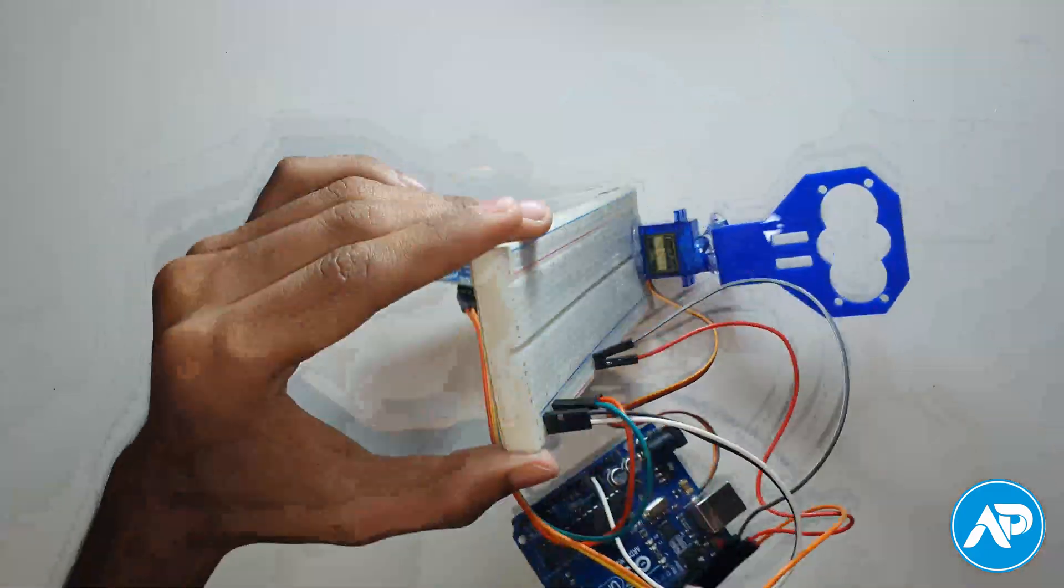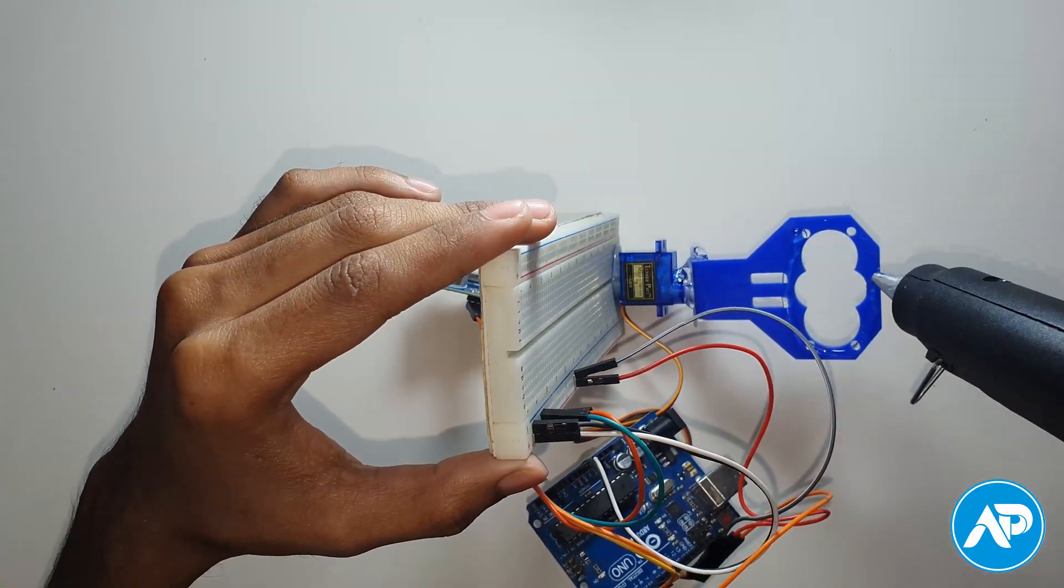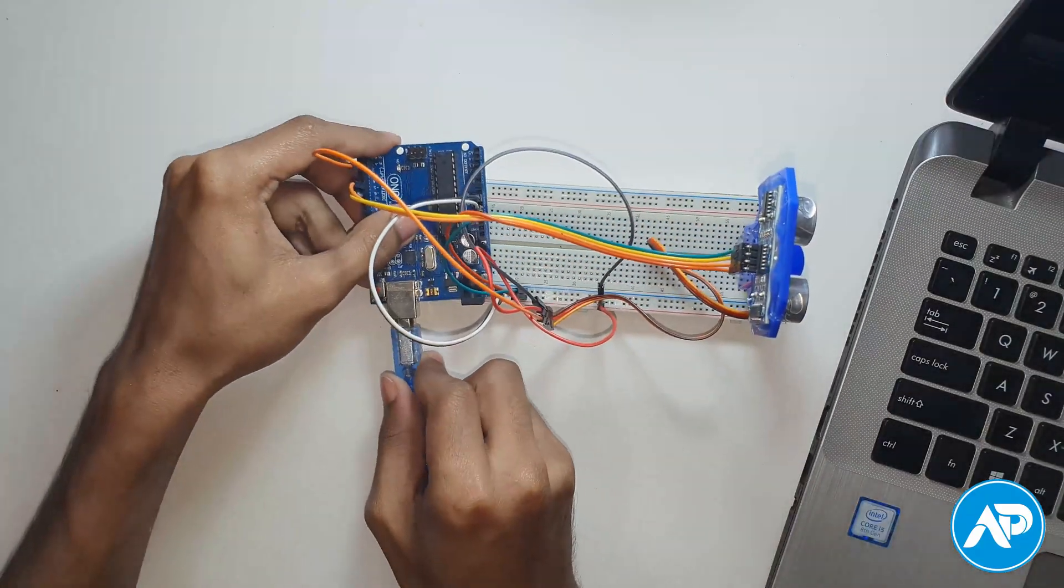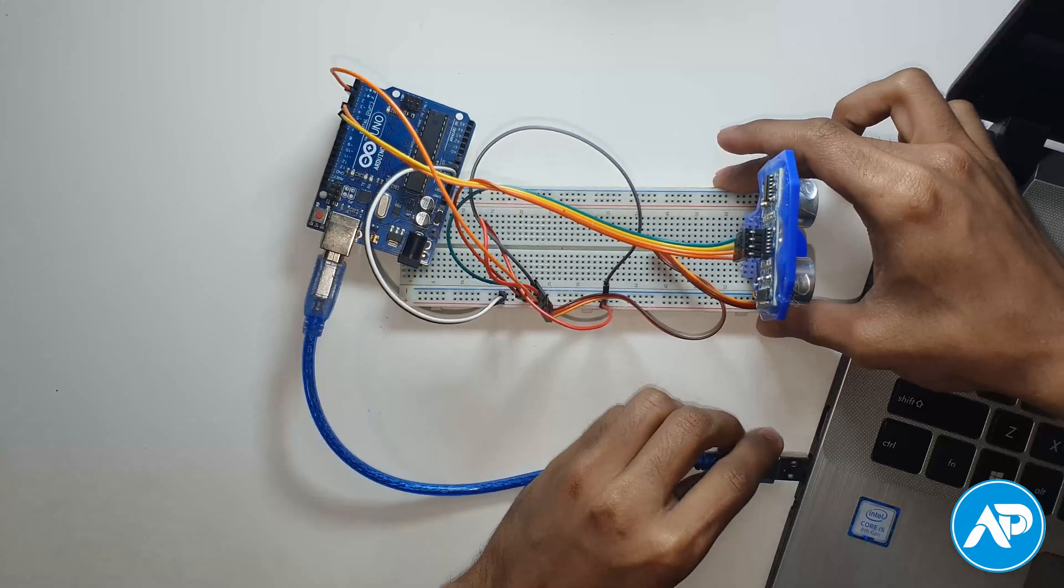Adjust the ultrasonic sensor stand on the servo horn, then place the ultrasonic sensor in the stand. Now connect the Arduino board to your computer or laptop with a USB cable.